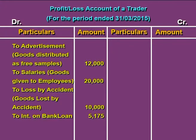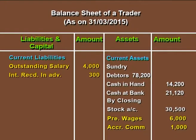This is the first effect. For the second effect, this outstanding interest of Rs 5,175 can be shown as an outstanding expense under current liabilities, or added to the bank loan in the balance sheet. Here it is shown separately as an outstanding expense under current liabilities. Bank loan is thus shown directly in the outer column for Rs 1,15,000.